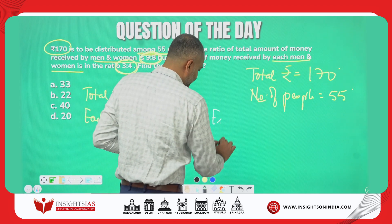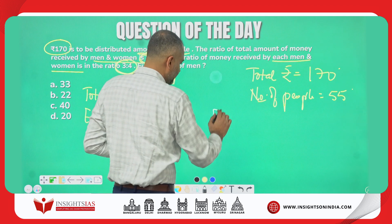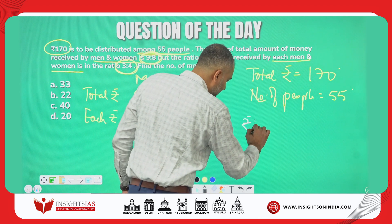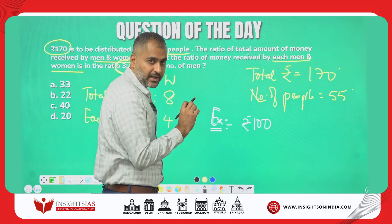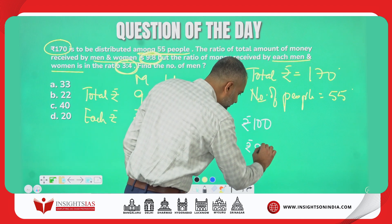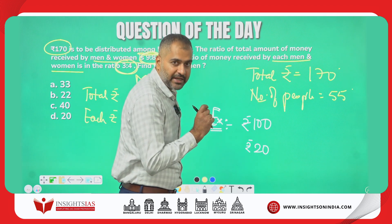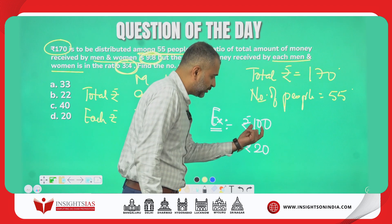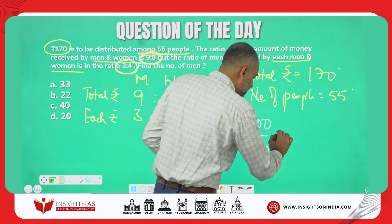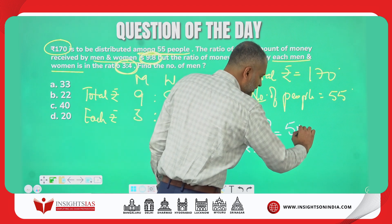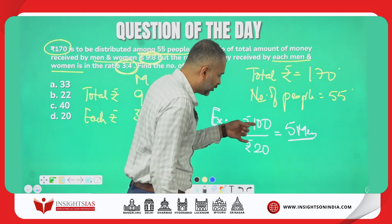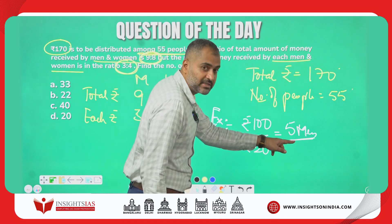I will take an example. Rupees 100 is distributed and each person is getting 20 rupees. Each man is getting 20 rupees. 100 rupees distributed, each person getting 20 rupees — what is the number of people? There are 5 men. Total money divided by each person's money gives the number of people.